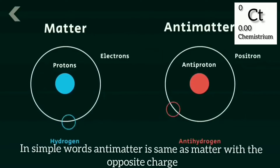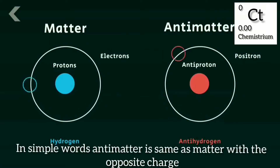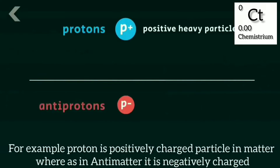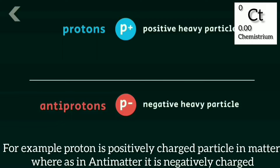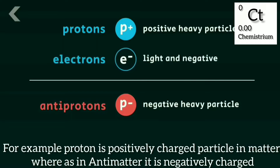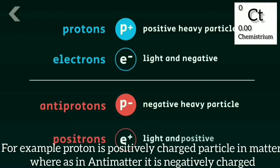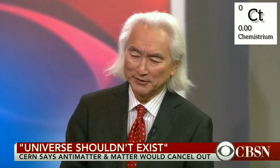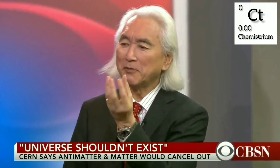In simple words, anti-matter is the same as matter with the opposite charge. For example, a proton is a positively charged particle in matter, whereas in anti-matter it is negatively charged. Anti-matter is the mirror image of ordinary matter — extremely rare. If I had some in my hand, it would look like ordinary matter and has the same chemical properties, except if I touch it, it would explode and destroy all of New York City, parts of Connecticut and New Jersey.